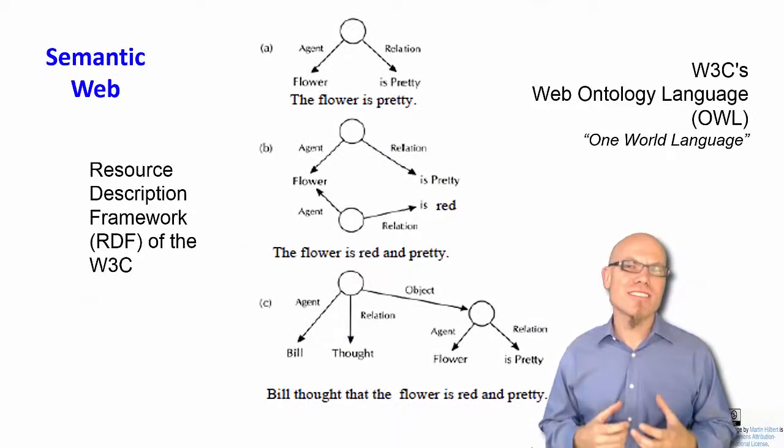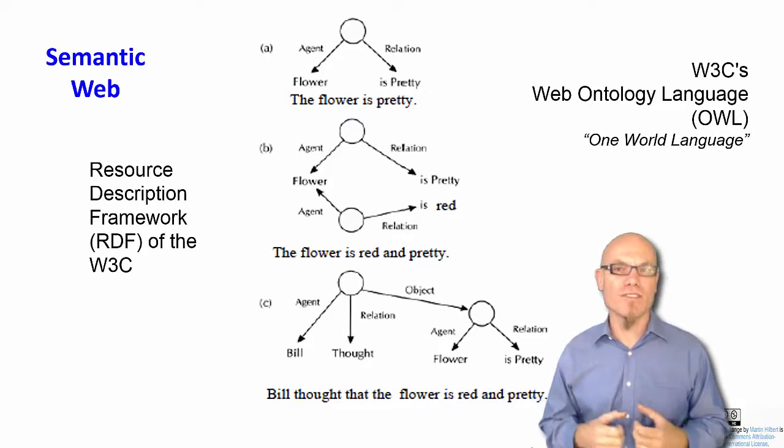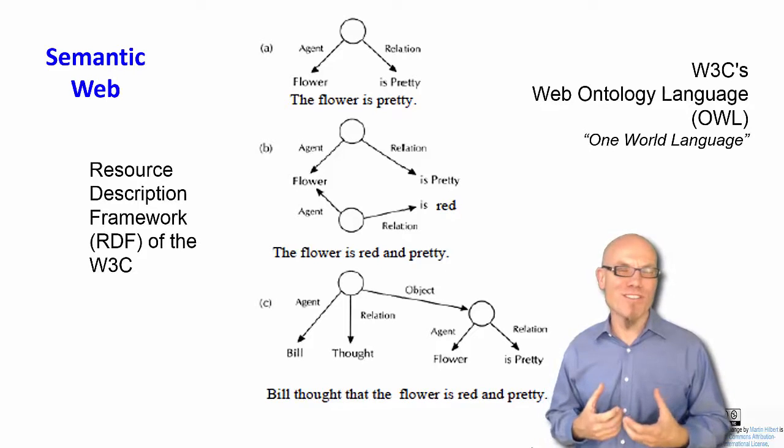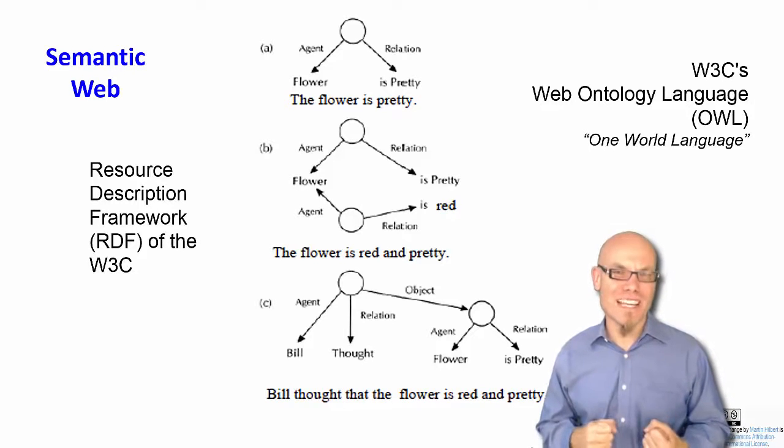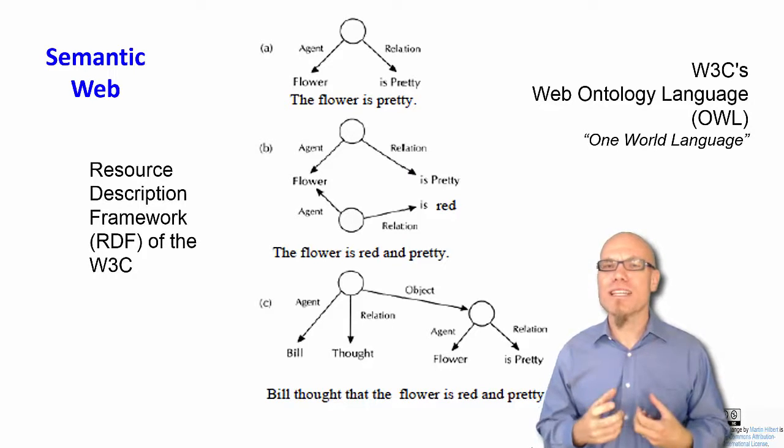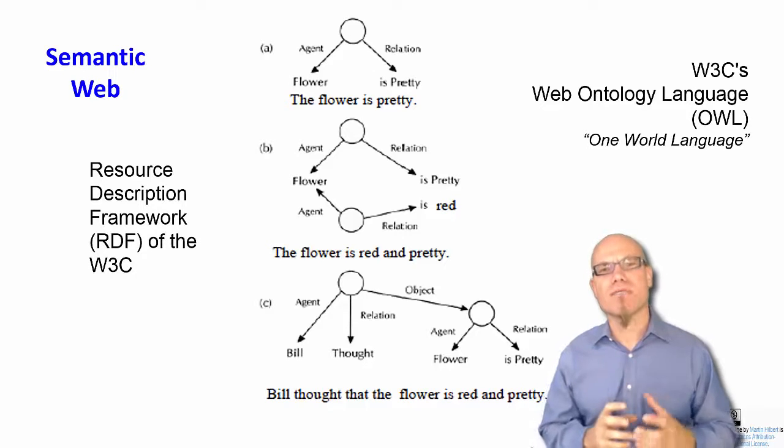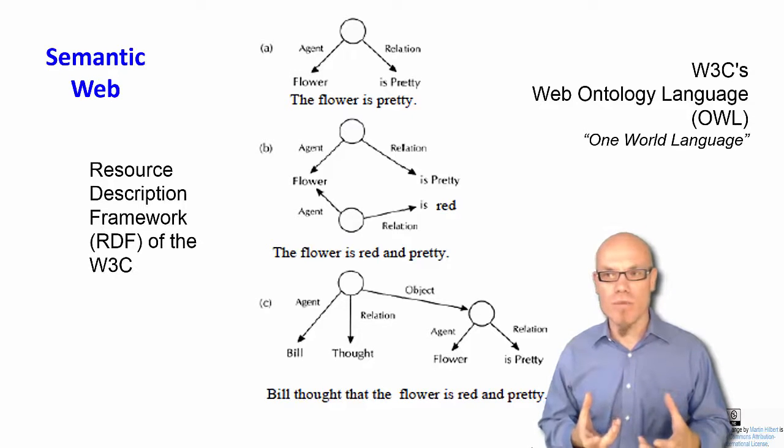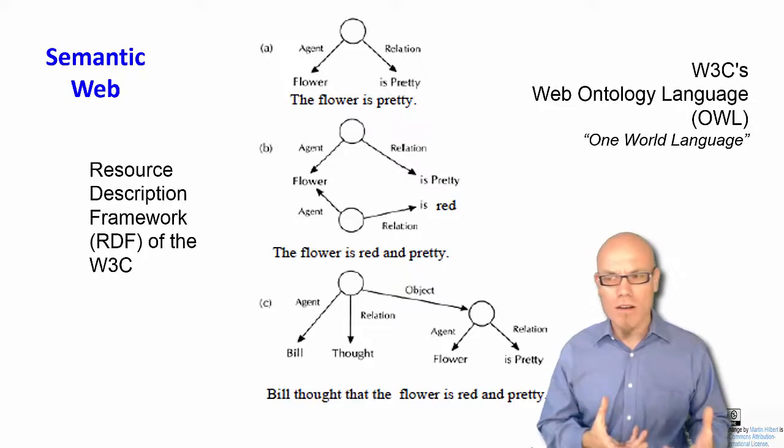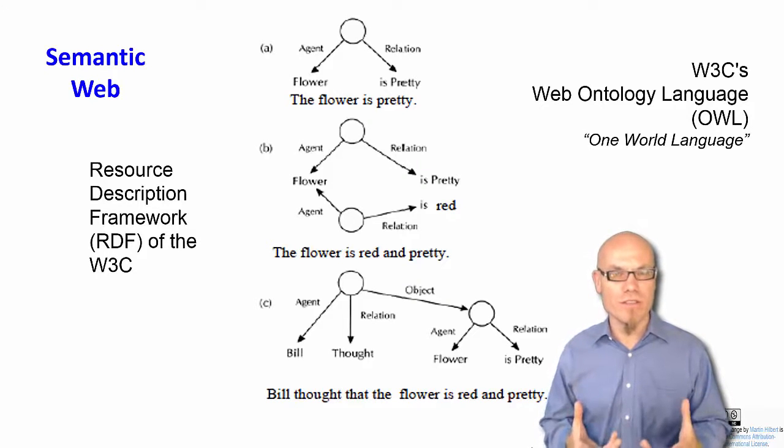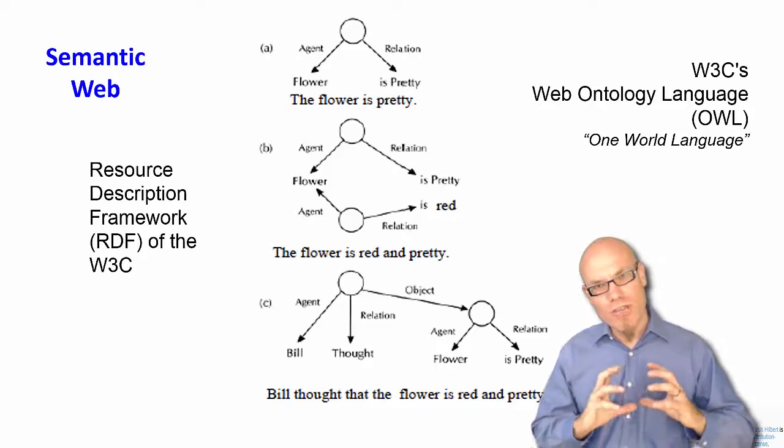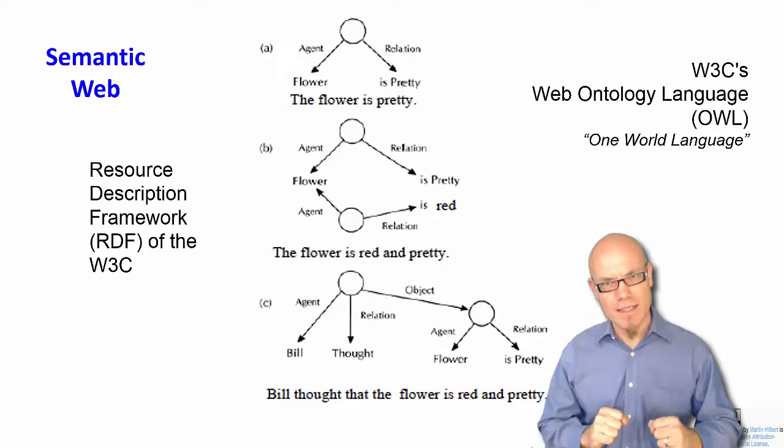And there are several efforts underway in how to do that. One is, for example, called the web ontology language. People also call it the one world language, because people say that will lead to the fact that now there is one standardized meaning for something. For example, if you now say the word bank, you don't really know, am I referring to a riverbank, or am I referring to a financial institution.